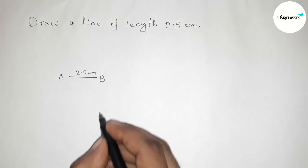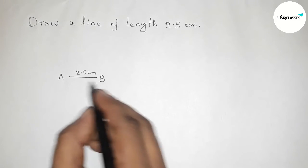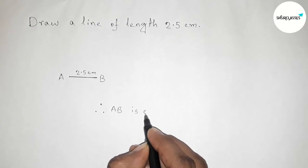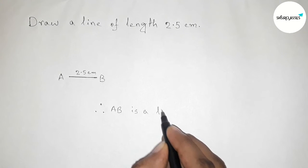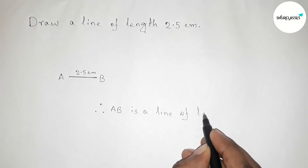Therefore the line AB, here AB is a line of length 2.5 centimeter, and by this way you can draw a line of length 2.5 centimeter by using scale.